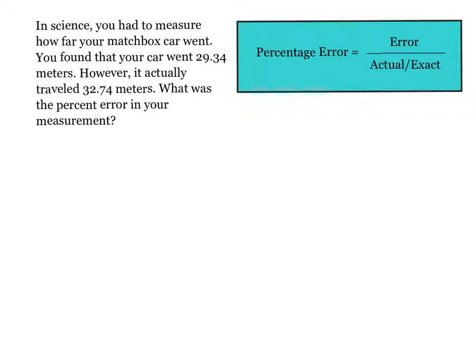Our first story problem is: In science, you had to measure how far your matchbox car went. You found that your car went 29.34 meters. However, it actually traveled 32.74 meters. What was the percent error in your measurement? Looking at this problem, 29.34 is our estimate and 32.74 is our exact. The thing to note here is we want to make sure both our labels are the same. Here they're both meters, so we can subtract meters from meters.